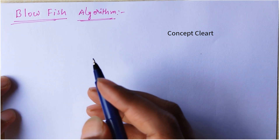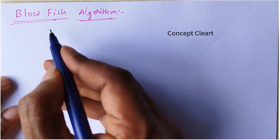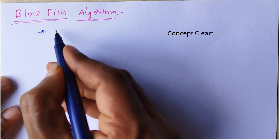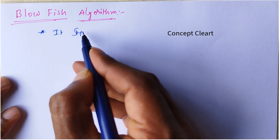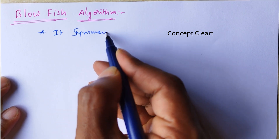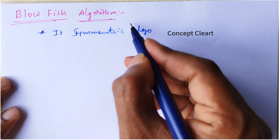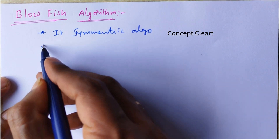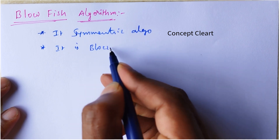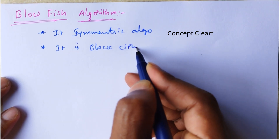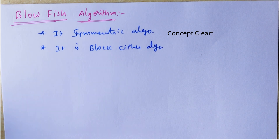What is the Blowfish algorithm? Blowfish algorithm is a replacement of the IDEA algorithm and DES algorithm. It is a symmetric key algorithm and it is a block cipher algorithm. We know what symmetric key and block cipher are — I am explaining every topic.